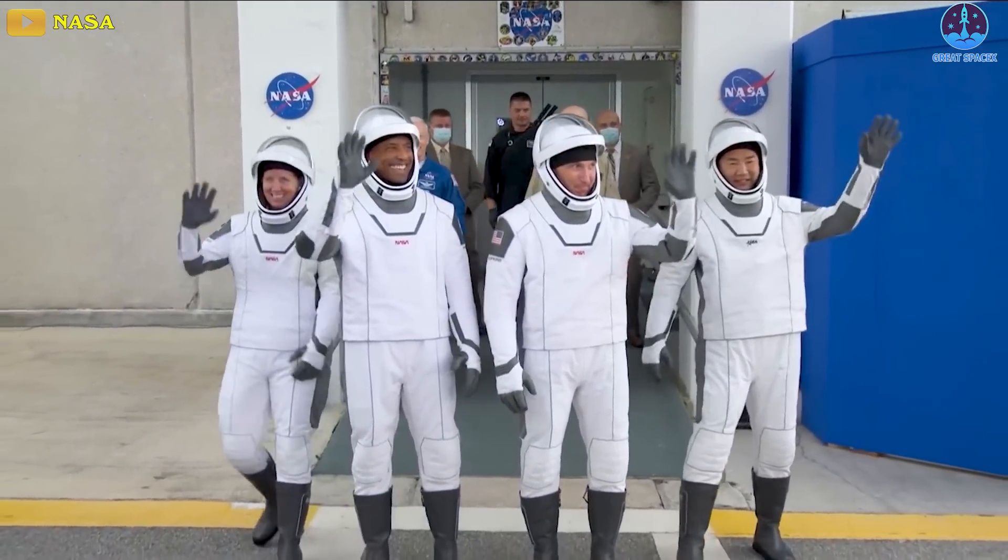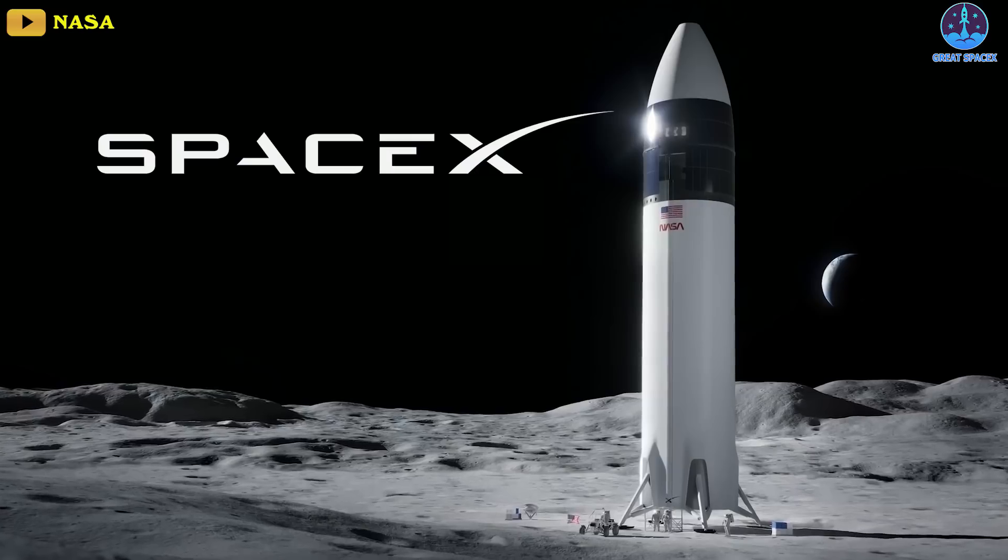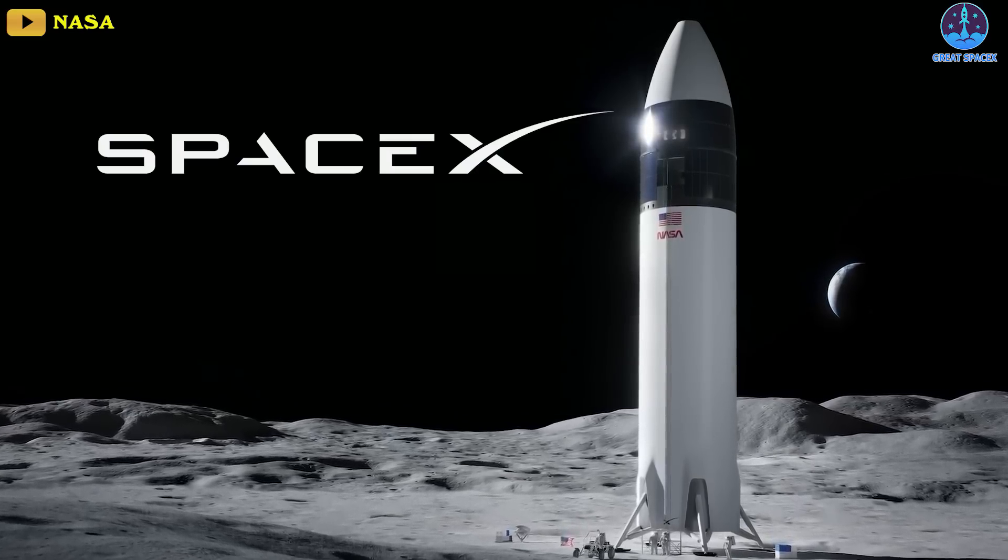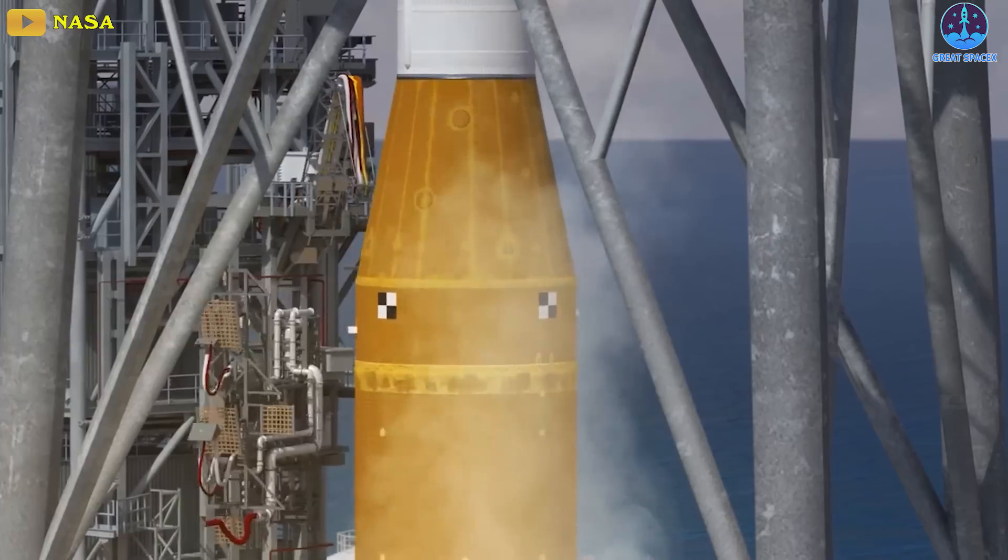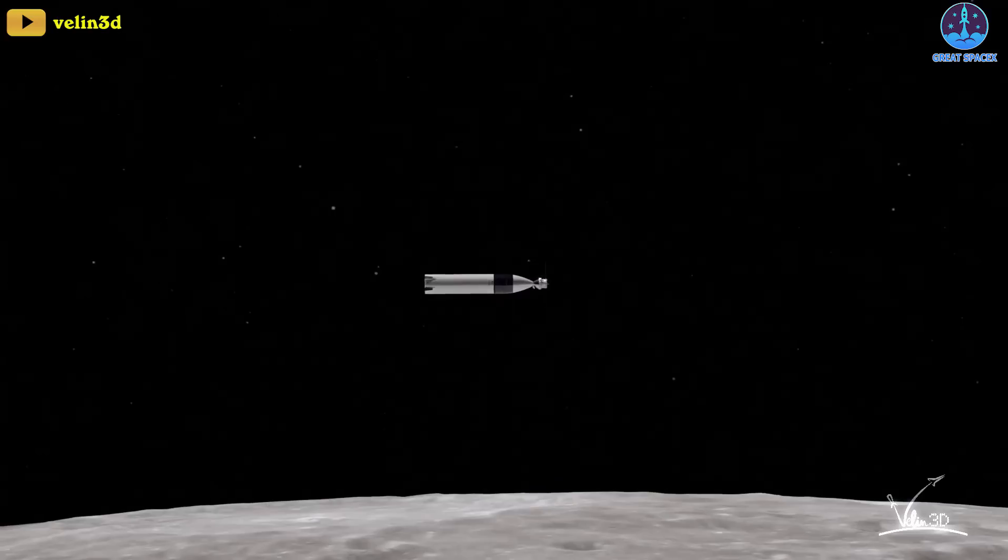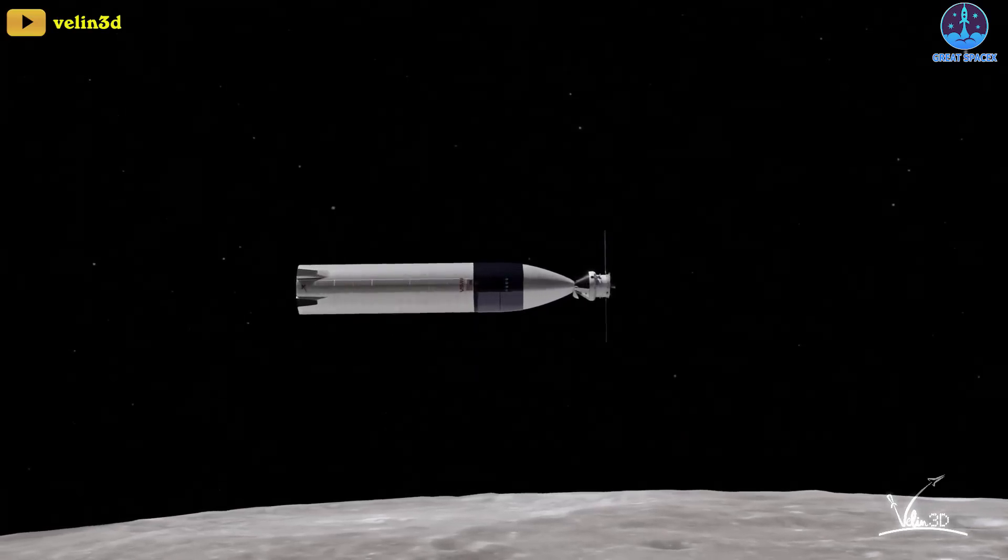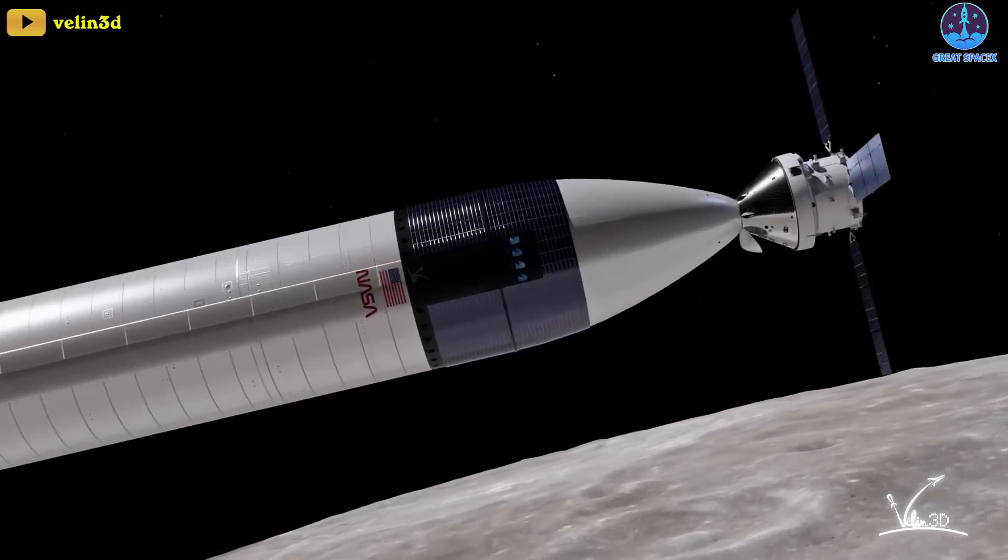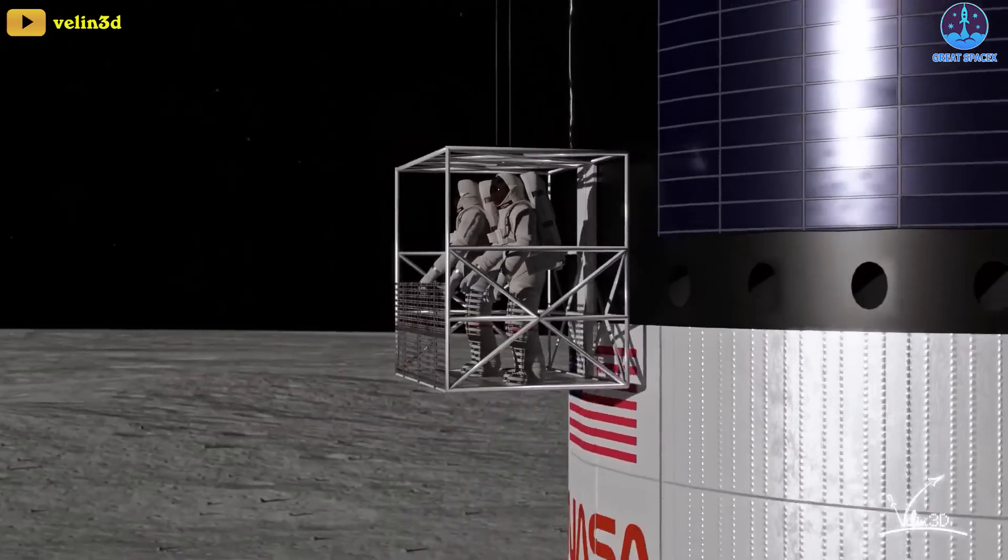This relationship became even stronger when NASA announced it selected SpaceX's starship to land humans on the Moon as part of the agency's Artemis program. According to the latest update, NASA astronauts will launch on a separate rocket and rendezvous with starship in lunar orbit to go down to the lunar surface and back to orbit.